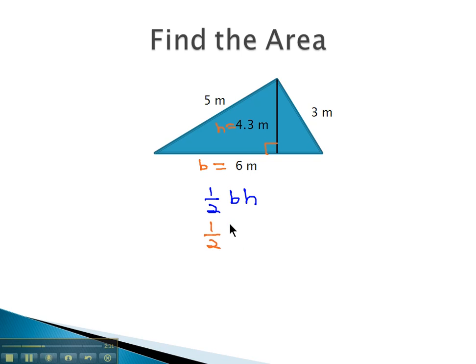Plugging this into the formula, 1 half times the base, or times the 6 meters, times the height of 4.3 meters, and then we simply have to evaluate this to find our area. Multiplying 1 half times 6, half of 6 is 3 meters, times the 4.3 meters.